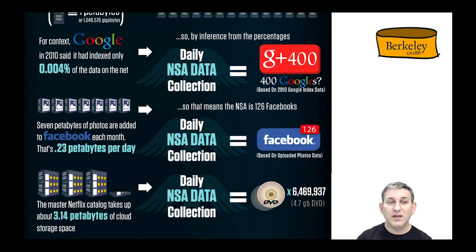Comparing it to Google at that time — Google had indexed only 0.004% of data on the net — NSA's daily data collection was 400 Googles, or 126 Facebooks, or 6.5 million DVD movies at Netflix. The NSA was looking at data at a scale well beyond what was being stored at these cloud services we tend to think of as the biggest data sources. The government can solicit information from the pipes that connect our data sources — getting data from communications providers as it flows by.